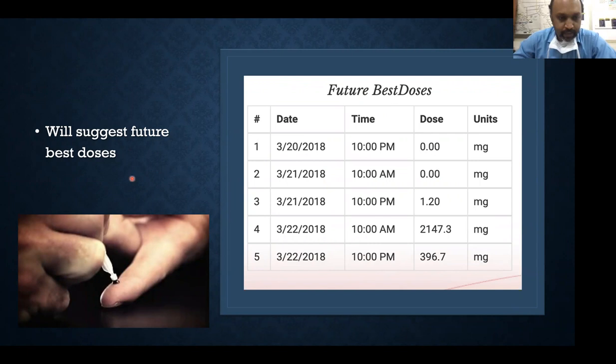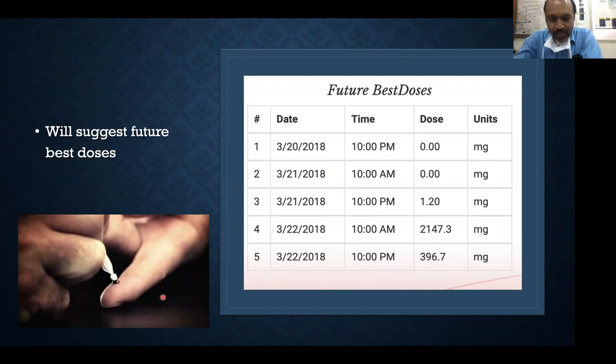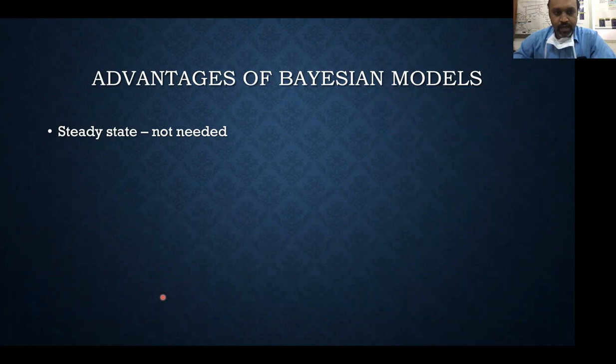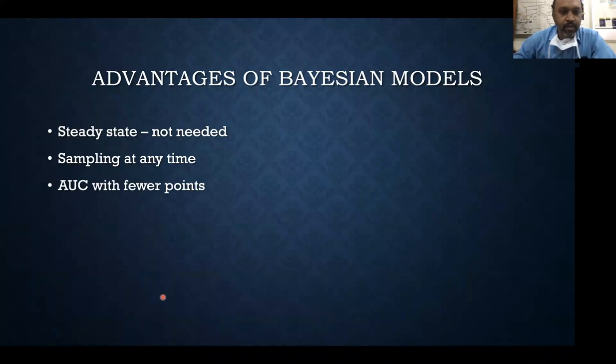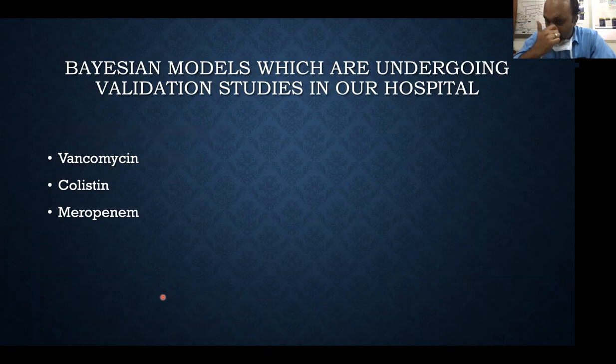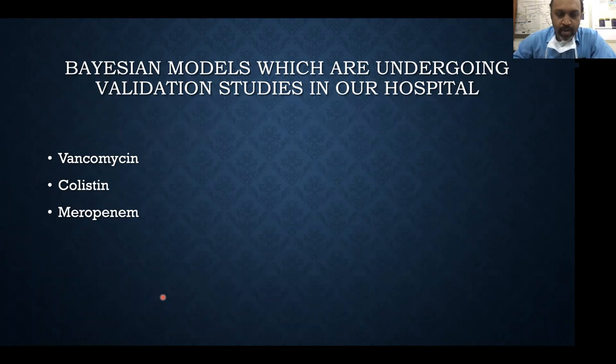In the future, with micro-sampling techniques — similar to glucometer checking for diabetes — this becomes a more practical way of doing TDM, covering most patients receiving antibiotics. The advantages of Bayesian PK/PD models: steady state is not required, you can sample at any time (but must know the exact collection time), and AUC can be obtained with fewer time points.